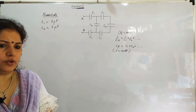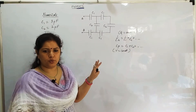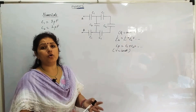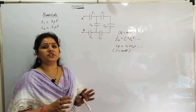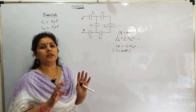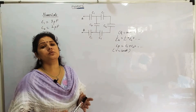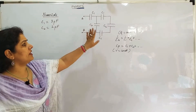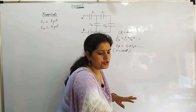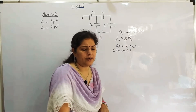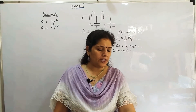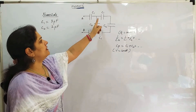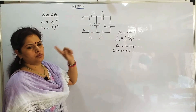On the basis of that, we are going to solve some numericals. Yesterday we also solved some numericals and learnt how to solve a circuit in which there are 5 resistors connected such that the overall arrangement matches the Wheatstone bridge arrangement. So, the question says: if C1 = 3 pF and C2 = 2 pF, calculate the equivalent capacitance of the network between points A and B. This is C1, C1, C1, C1, C1, C2, C2.